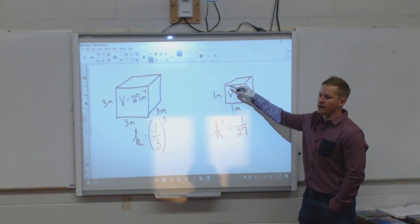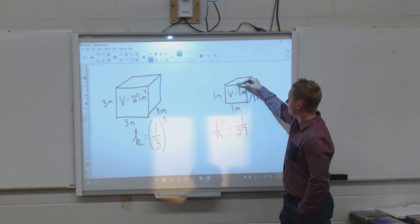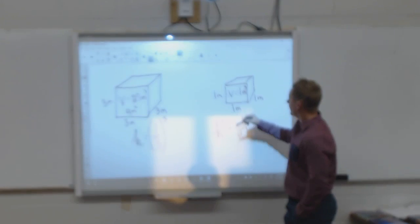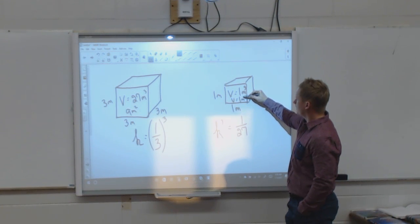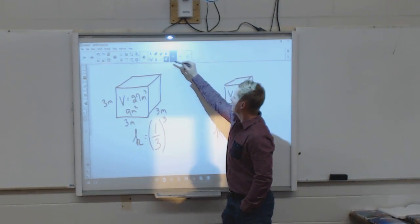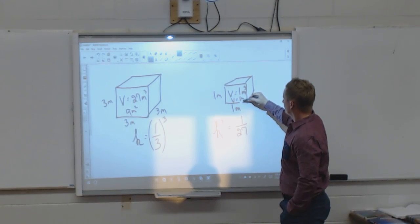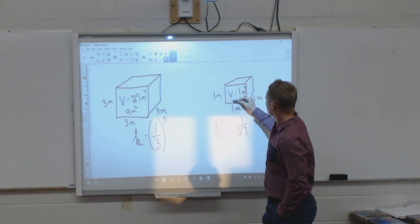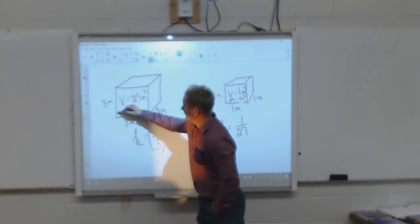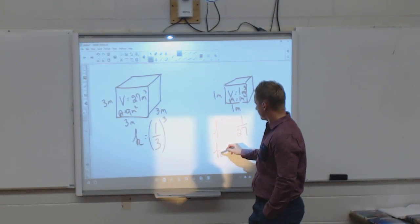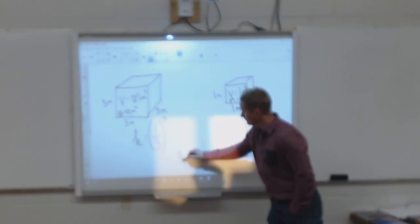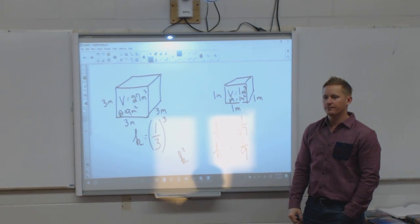So we've done this with area last day, in which we just did the front of it. So 3 by 3 would give me 9 meters squared, right? And then this area here would have been 1 meter squared. So the K squared factor was by one ninth, or K squared.